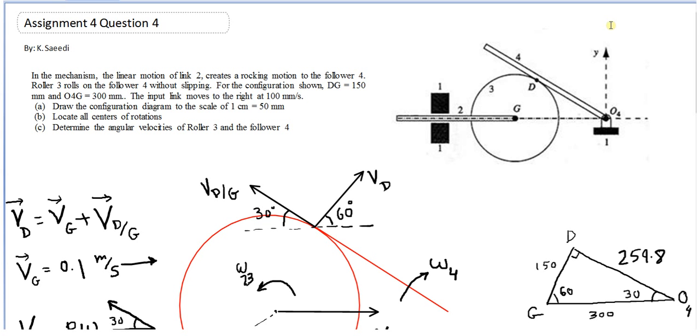On the other hand, we have an equation for velocity of D: VD equals velocity of G plus velocity of D with respect to G. I know VG, the magnitude of the vector, is 0.1 meter per second and the direction is known. VDG direction is known but magnitude is not known. VD direction is known but magnitude is not known.